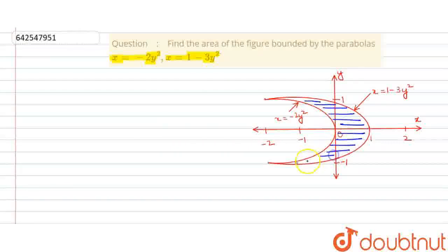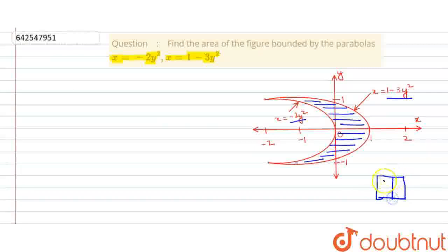We have to calculate this area. What we are going to do is calculate the area bounded by the parabola x equals 1 minus 3y squared and subtract the area bounded by the parabola x equals 2y squared. Think of it like a rectangular box and a smaller rectangular box inside — you find the area of the whole box and subtract the inner part.